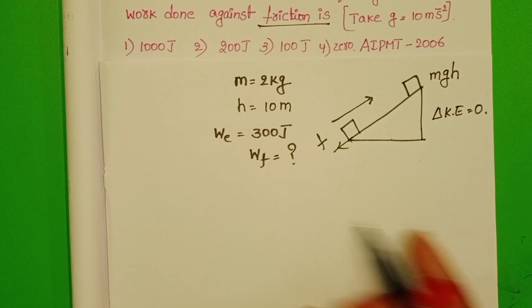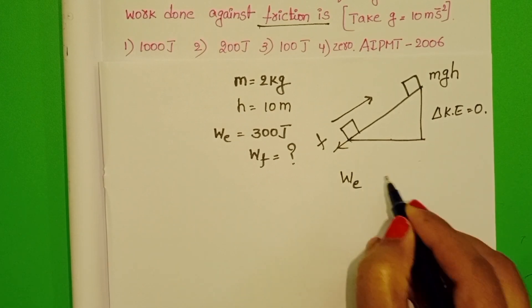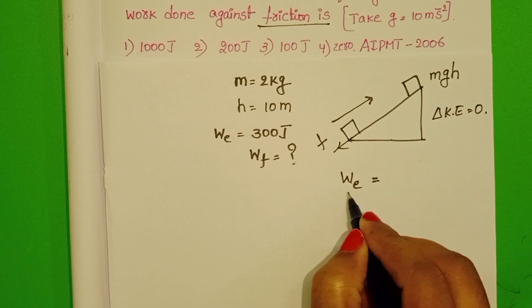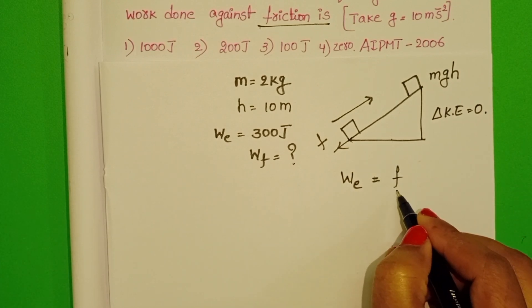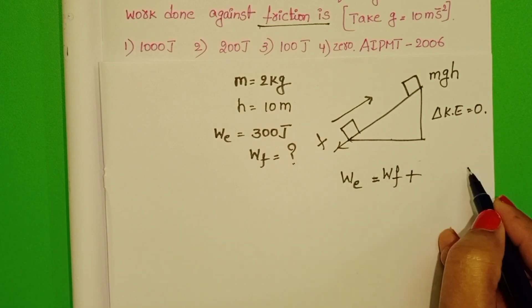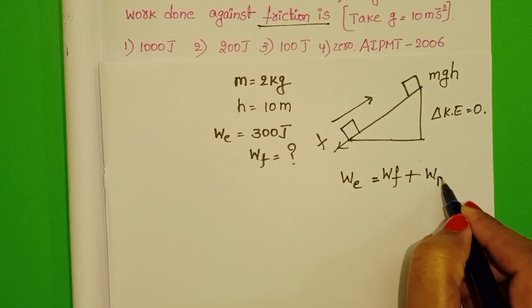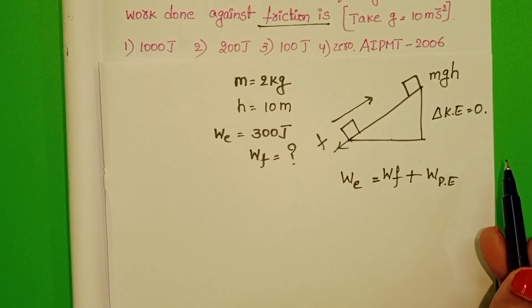So write the equation. Total external work done or total external energy is equals to sum of work done by the frictional force plus work done by the potential energy. Otherwise, write the same equation in another way also.